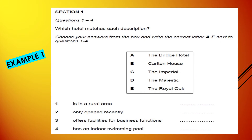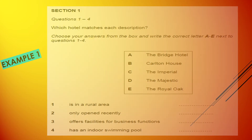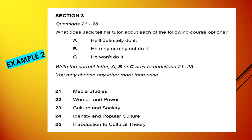Matching questions come in several different forms. Here are a couple of examples from the past papers. In the first example you can see there are a few options from A to E given in the box, and under 1, 2, 3, 4, I need to identify which matches with what. In the second example there are three different options given A, B and C, and the question clearly states you may choose any letter more than once, which means the answers can be repeated.